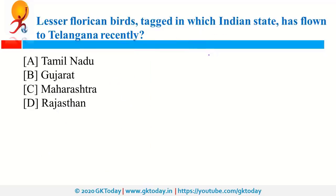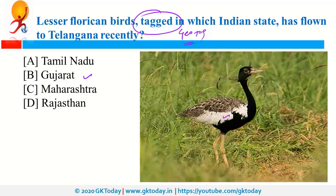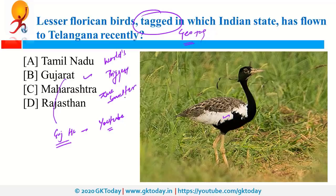Lesser Florican birds tagged in which Indian state have flown to Telangana recently? These birds were tagged by the Gujarat Forest Department. A geotagging device is attached to the body of the bird so that its movement can be tracked. Recently, Gujarat was also in news as Gujarat High Court became the first High Court in the country to live stream proceedings on YouTube. Gujarat government also announced that it is going to set up the world's biggest zinc smelter project.